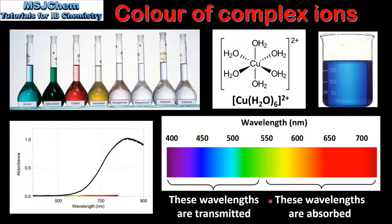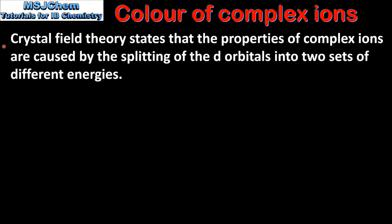Next we look at what causes these wavelengths of light to be absorbed. We will take a quick look at crystal field theory. Crystal field theory states that the properties of complex ions are caused by the splitting of the d orbitals into two sets of different energies.